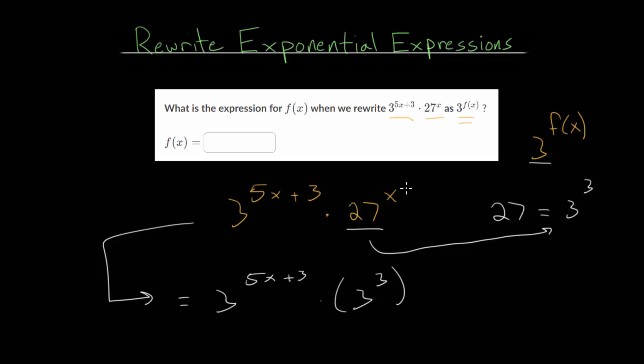And, 27 was raised to the x power. So, this 3 to the 3rd would be raised to the x power. And, from here, now that we have the same base, we can use exponent properties to just combine these together.